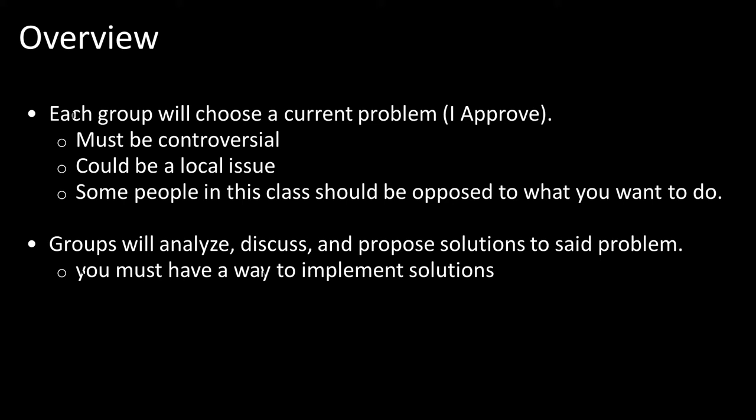The persuasive presentation works as follows: you and your group members will choose a controversial current problem that exists right now in the status quo, and you will need to get approval on that topic from me. This topic has to be a controversial issue — it could be a local issue — and you need to make sure you're choosing something that at least some people in this class are opposed to, because you need to actually engage in some persuasion. During the presentation, you will analyze the problem, discuss its implications, propose some solutions, deal with naysayers, and ultimately come up with a way to implement change and solvency to that problem.